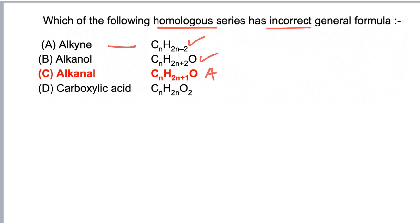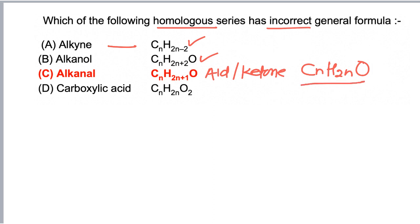For aldehyde and ketone, the general formula is CₙH₂ₙO. All aldehydes and ketones follow the same general formula. This option is incorrect. For carboxylic acid, CₙH₂ₙO₂ is the correct formula, and hence the answer is C.